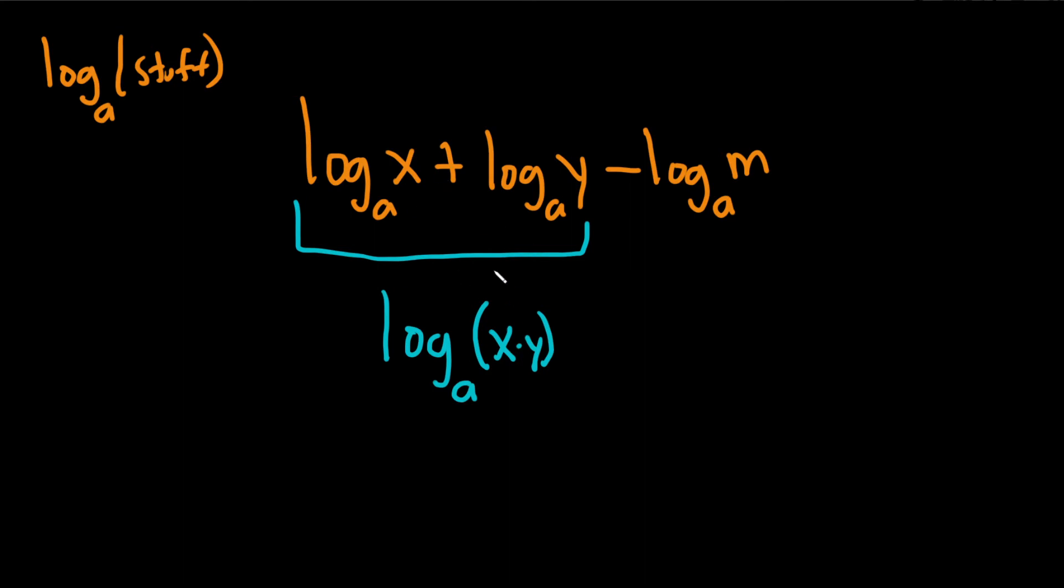And that's actually the property. This is the rule. If you have log base a of x times y, it just becomes the sum of these two logs. And this one here hangs out, minus log base a of m.